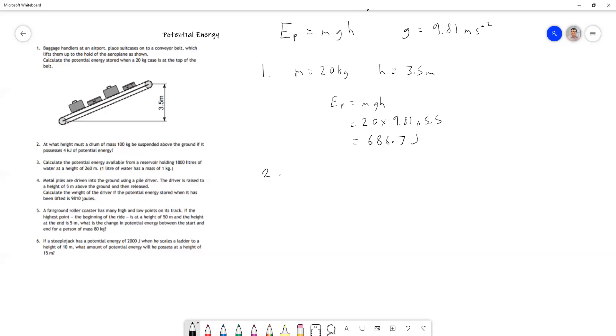Question two asks: What height must a drum of mass 100 kilograms be suspended above the ground if it possesses 4 kilojoules of potential energy? The mass is 100 kilograms, and the potential energy is 4 kilojoules, which is the same as 4000 joules. We need to rearrange the formula Ep = mgh to find h. The simplest way is to divide both sides by m and by g, getting h = Ep / (mg).